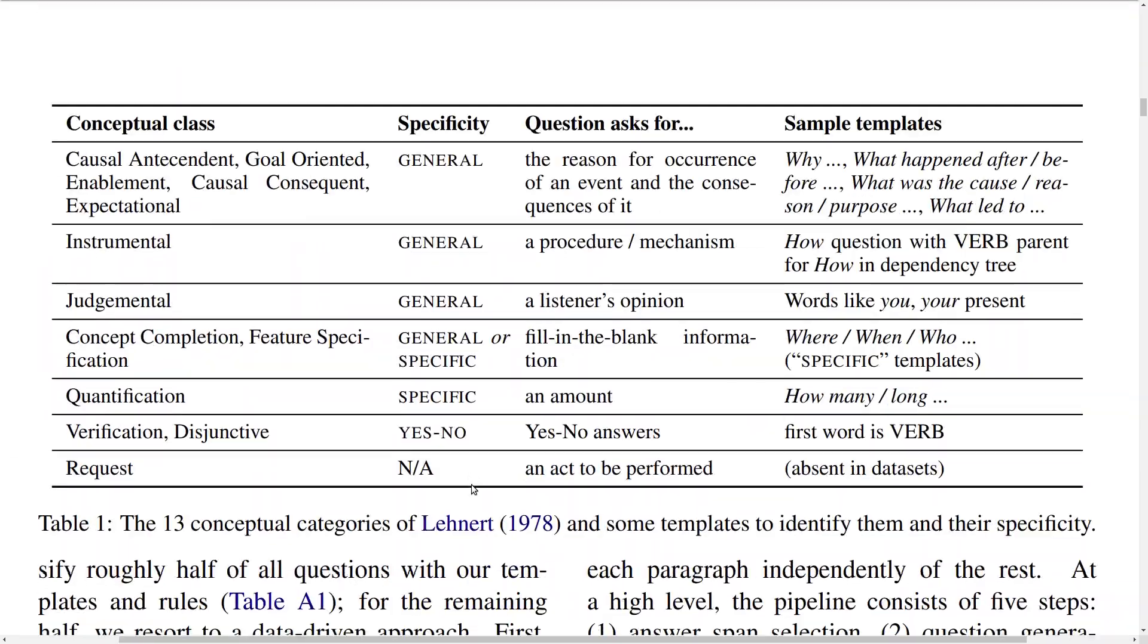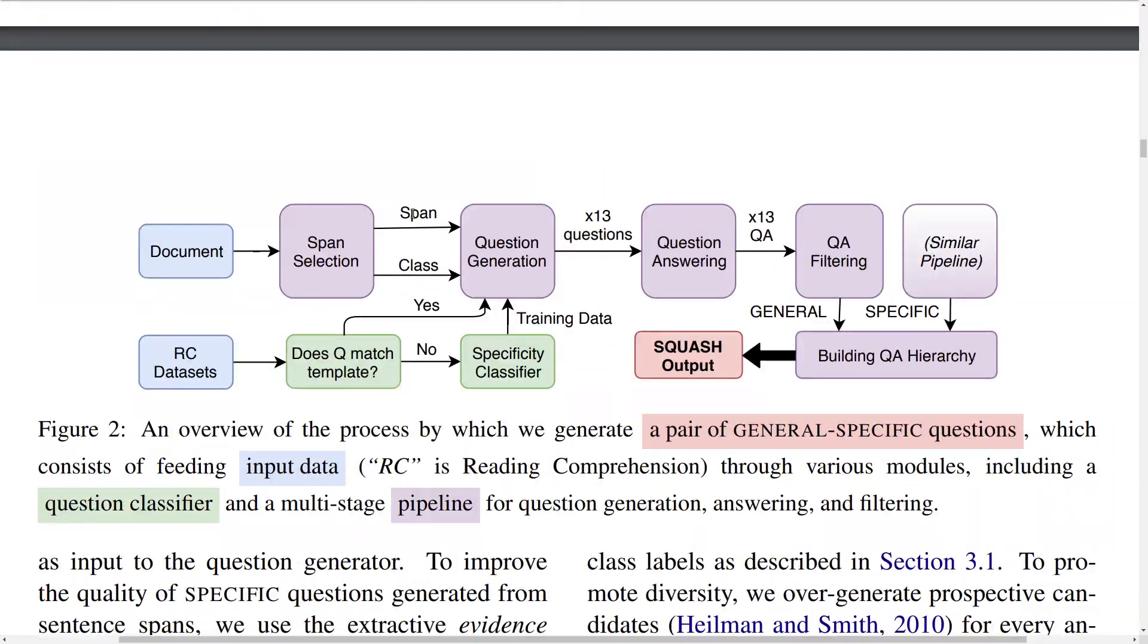So to give you a brief overview of the pipeline, given that you have an input document, you're actually going to be splitting it into paragraphs. And for each paragraph, you're going to be applying a question generation module which will generate 13 questions in this case, which are candidate questions. You're also going to have a question answering module which will generate answers for those questions.